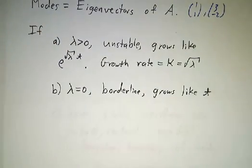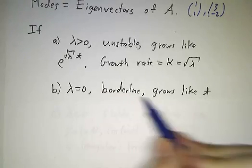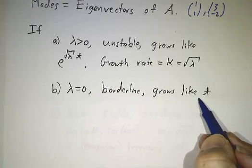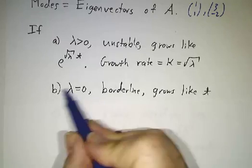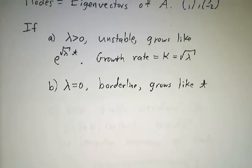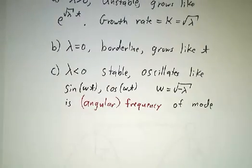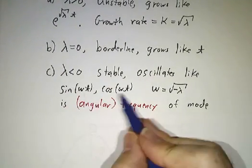If lambda is 0, you get constants plus constant times t. We didn't have any in this example, but you can. And if lambda is less than 0, then you get oscillations. Things go as sine and cosine.